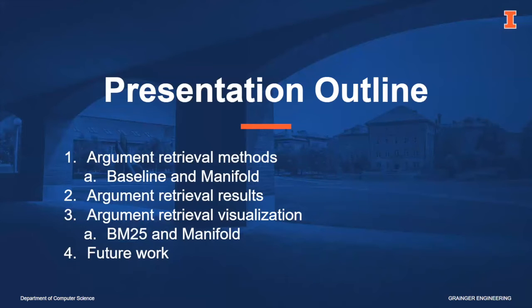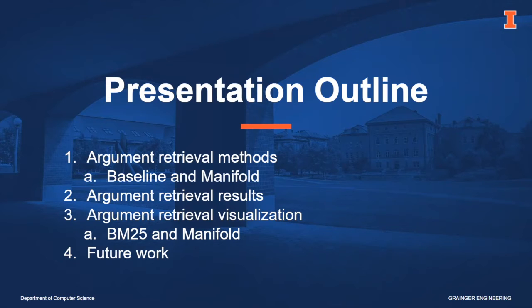The outline of this presentation will first talk about our submissions to this task, including three baseline methods and two methods based off of manifold approximation. Then we'll talk about the retrieval results — the scores we got for the submission runs. And then we'll talk about some argument retrieval visualization methods and future work.